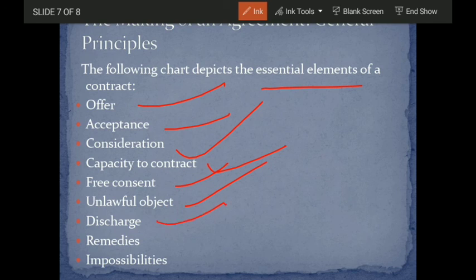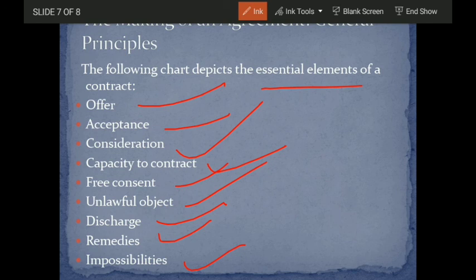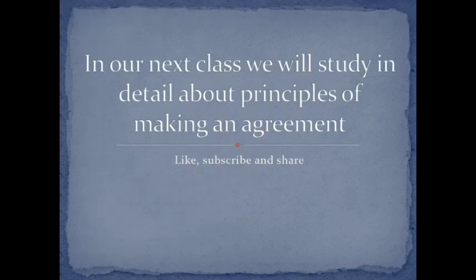Discharge — the contract must be completed. Remedies — if for any reason any party faces a problem and fails to fulfill their part of the contract, what remedies are available to the other party? And impossibilities — if something happens that makes performance impossible. These are the essential elements of a contract.